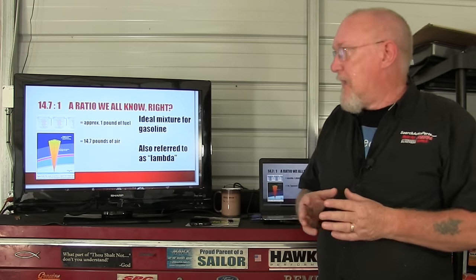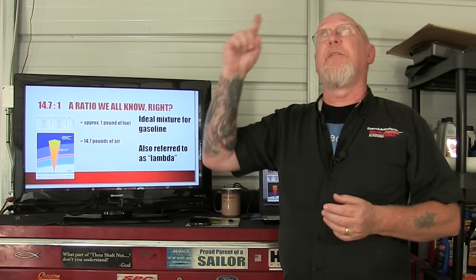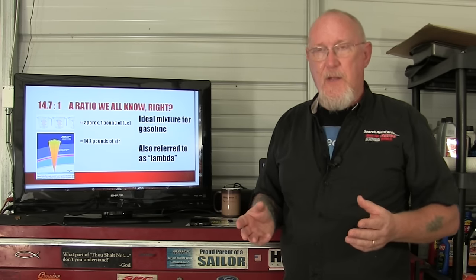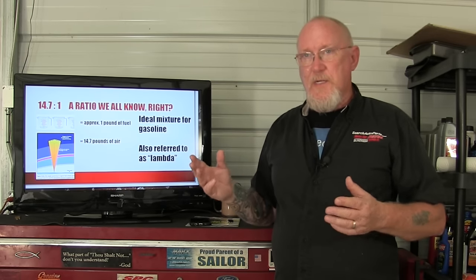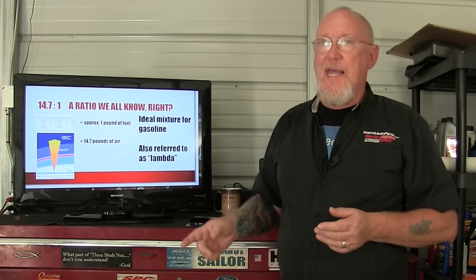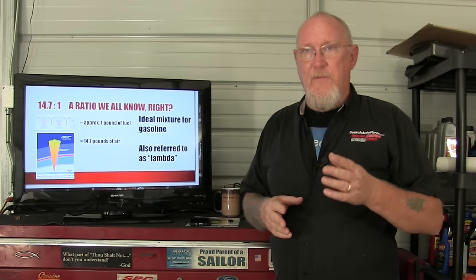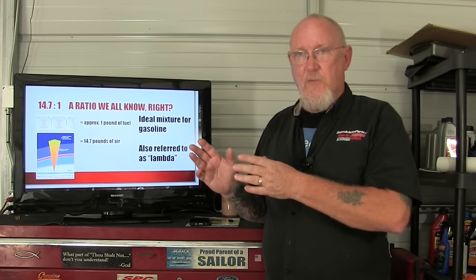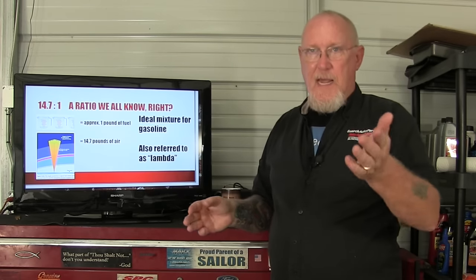Here you see at the top we have a couple of measuring cups — two and a half cups to be exact. Two and a half cups of fuel weighs about one pound in terms of this 14.7 to 1 ratio. Now the 14.7 pounds of air that has to go with it — imagine one square inch that extends from the floor 50 miles straight up; that's how we determine atmospheric pressure, the 14.7 psi we're all familiar with. Or consider one square foot extending 182 feet straight up — that column of air weighs 14.7 pounds. That's what we're looking at: how much air mixed with how much fuel to give the correct ratio to provide the correct feed gases to the catalytic converter.